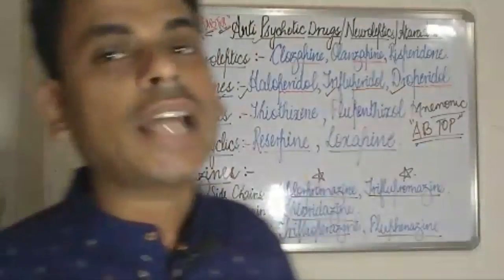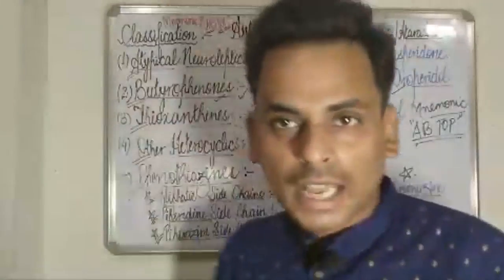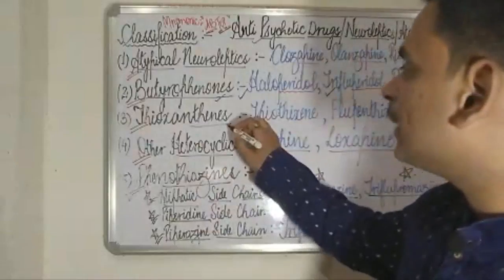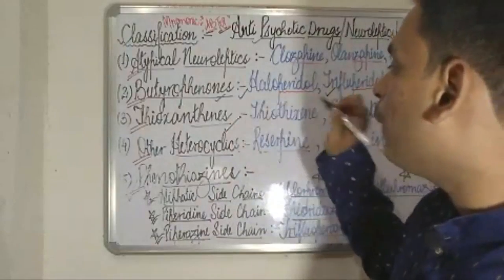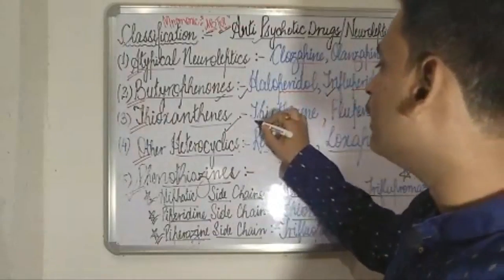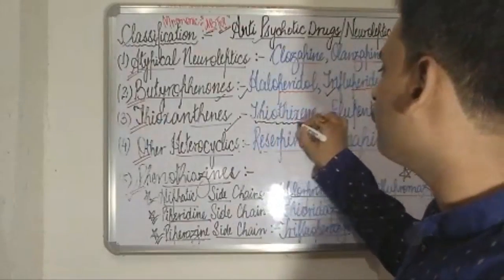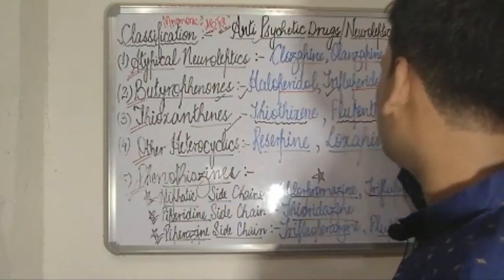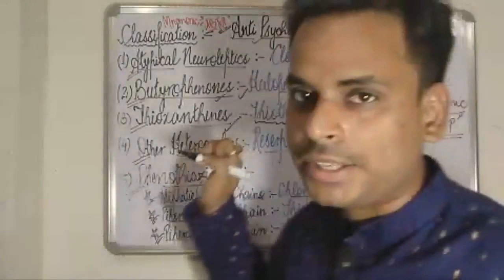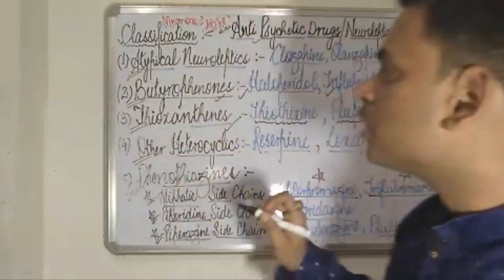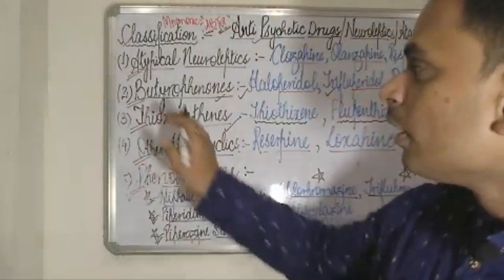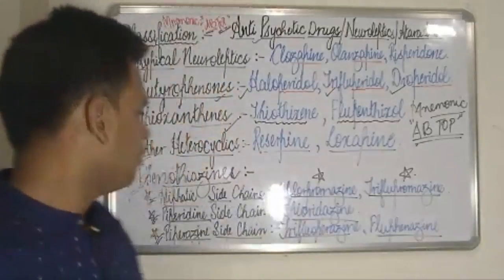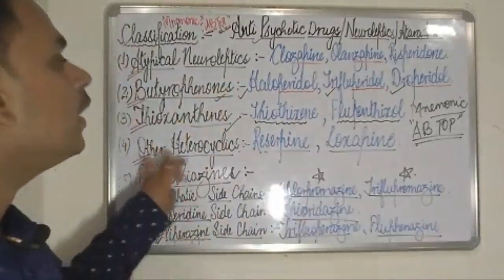Moving on to the T of TOP — the T refers to the thioxanthine class of drugs. The famous drugs under this category are thiothixene and flupenthixol.